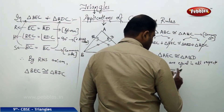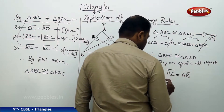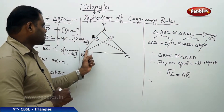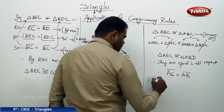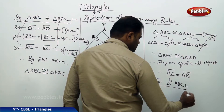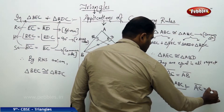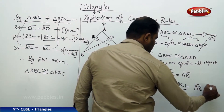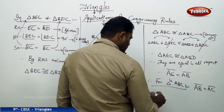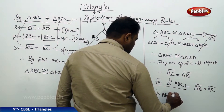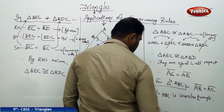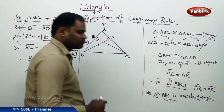Since triangle ABD and triangle AEC are equal in all respects, their corresponding sides must be equal. Therefore, side AB of triangle ABD equals side AC of triangle AEC. So AB equals AC, which means the two sides of triangle ABC are equal, and hence the triangle is isosceles. That is how I conclude the proof using congruency rules.